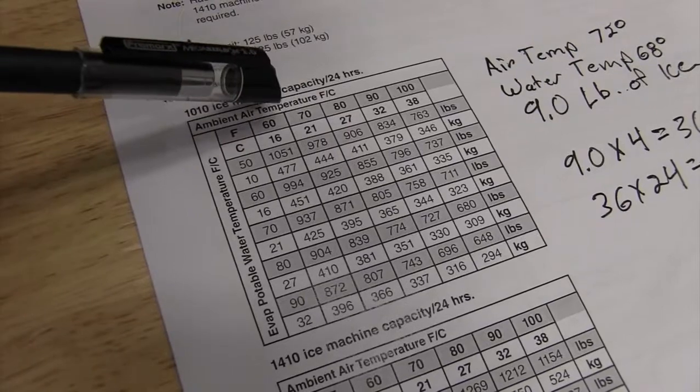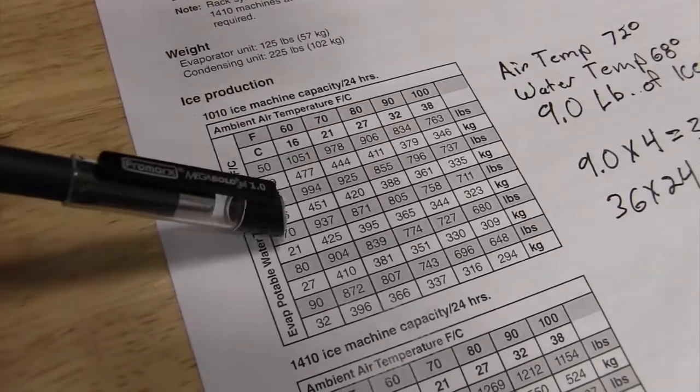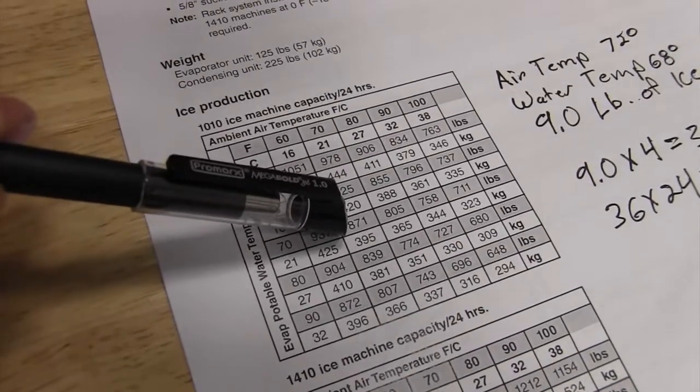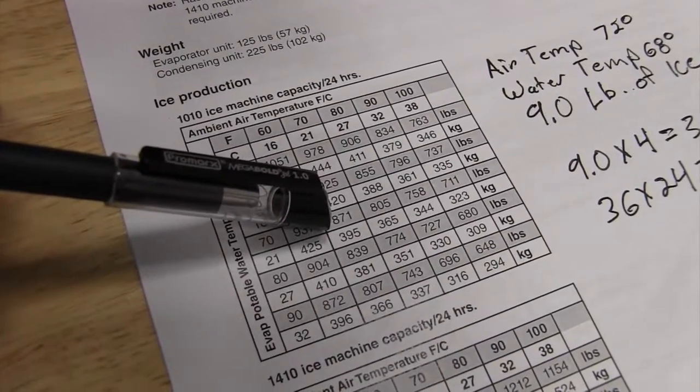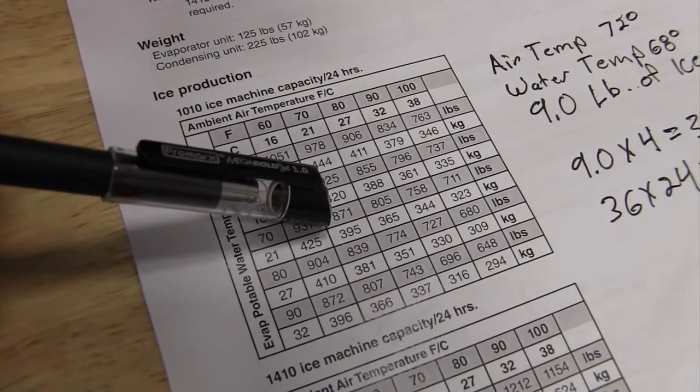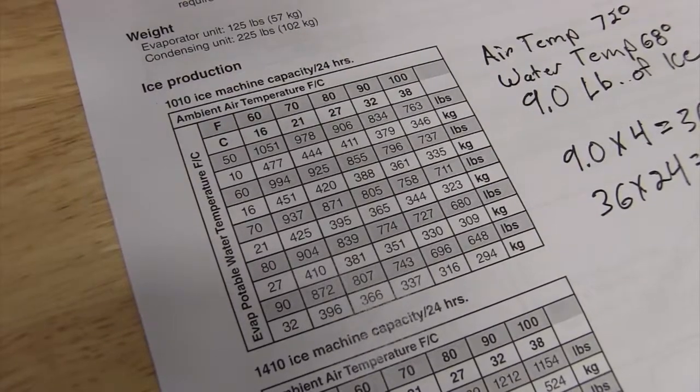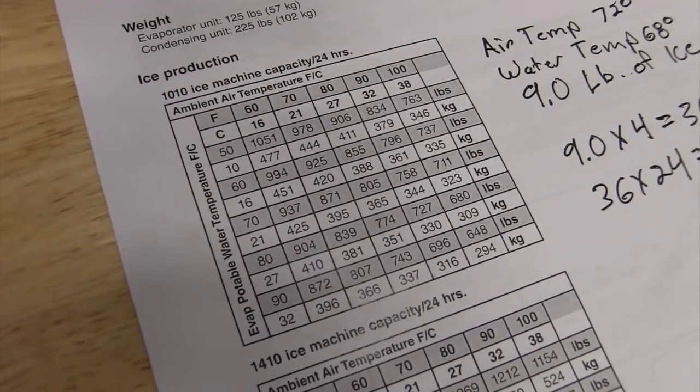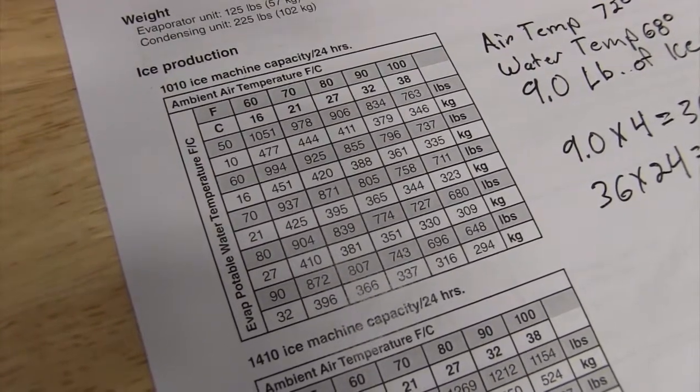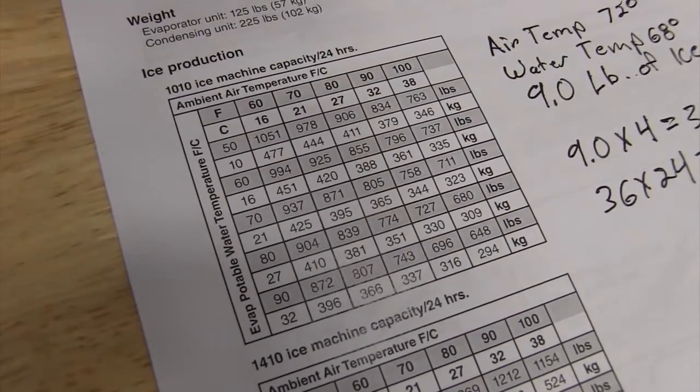On this chart, if we look, we would take our 70 degree ambient air temperature, our 70 degree water temperature, and our expected production rate is 871 pounds. We had 864, we're looking at a plus or minus 10% for our factors. What this is going to do is prove that our ice machine is making good quality ice and it's making the proper production.